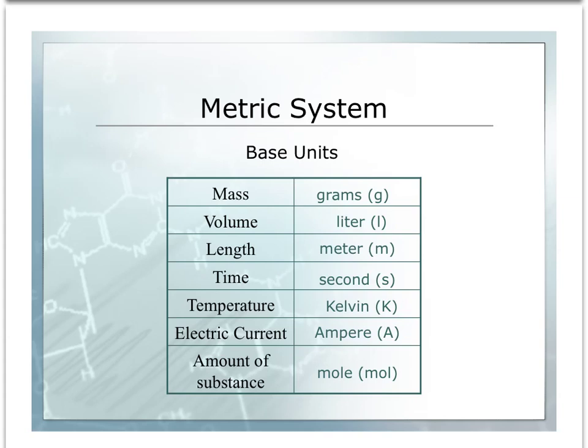In chemistry, the system of measurement that we will be using will be the metric system, and these are the most common base units. We will be using grams for mass, liters for volume, meters for length, seconds for time, kelvin for temperature, amperes for electric current, and mole for the amount of a substance. These base units are what we will add the prefixes to when we are making our units either larger or smaller.